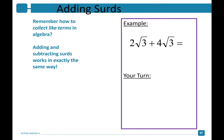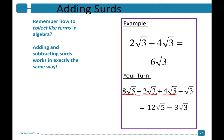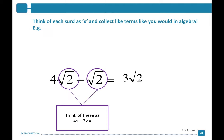Let's look at how we can add SURDs. 2 root 3 plus 4 root 3. When adding SURDs we collect like terms in the same way that we would in algebra. 8 root 5s plus 4 root 5s gives you 12 root 5s. 9 root 5s minus 2 root 3s minus 1 root 3 leaves me with minus 3 root 3s. Remember, when there is no value on the outside it's the same as saying 1. Think of each SURD as a term and collect like terms when adding and subtracting.